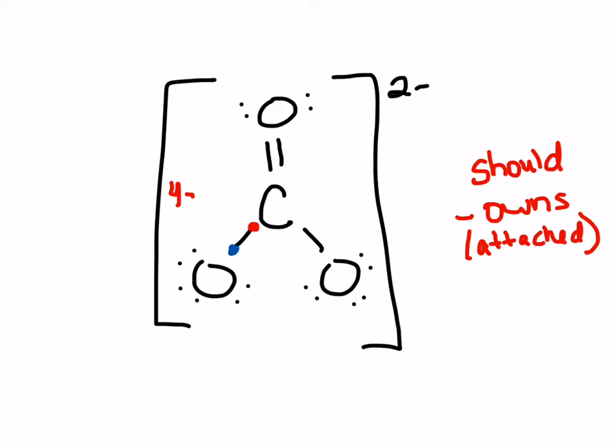When you think of owning, each bond only counts as one. So the carbon owns one, two, three, four valence electrons in the structure. It should own four, so that gives it a formal charge of zero — it has the correct number it should have.